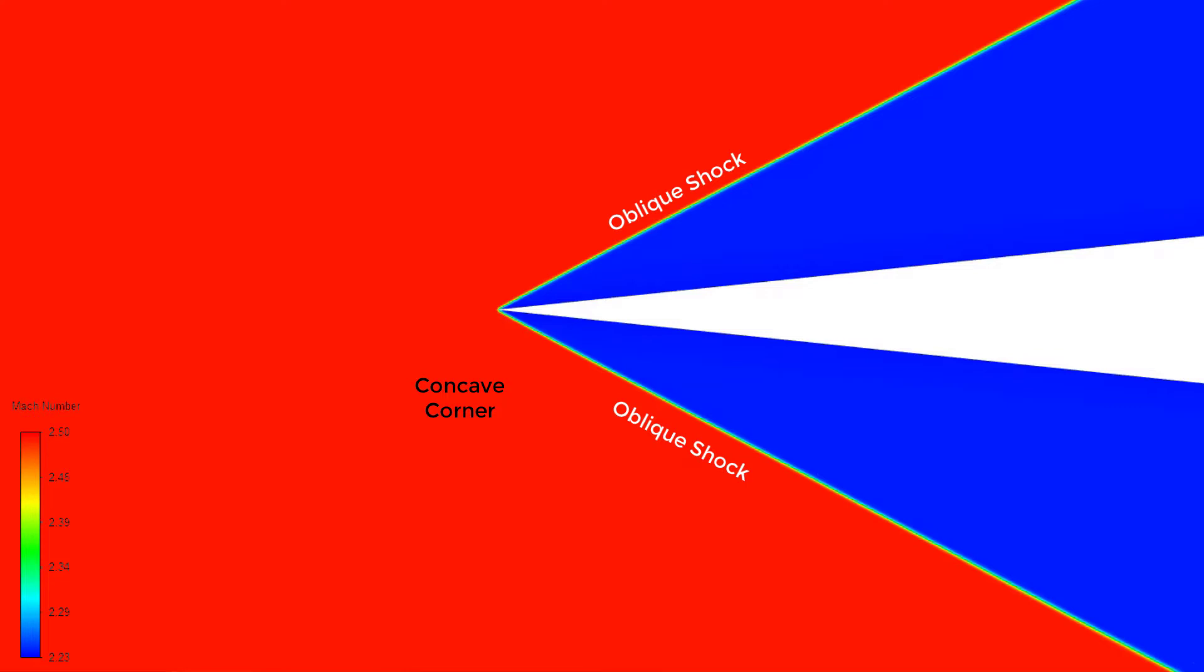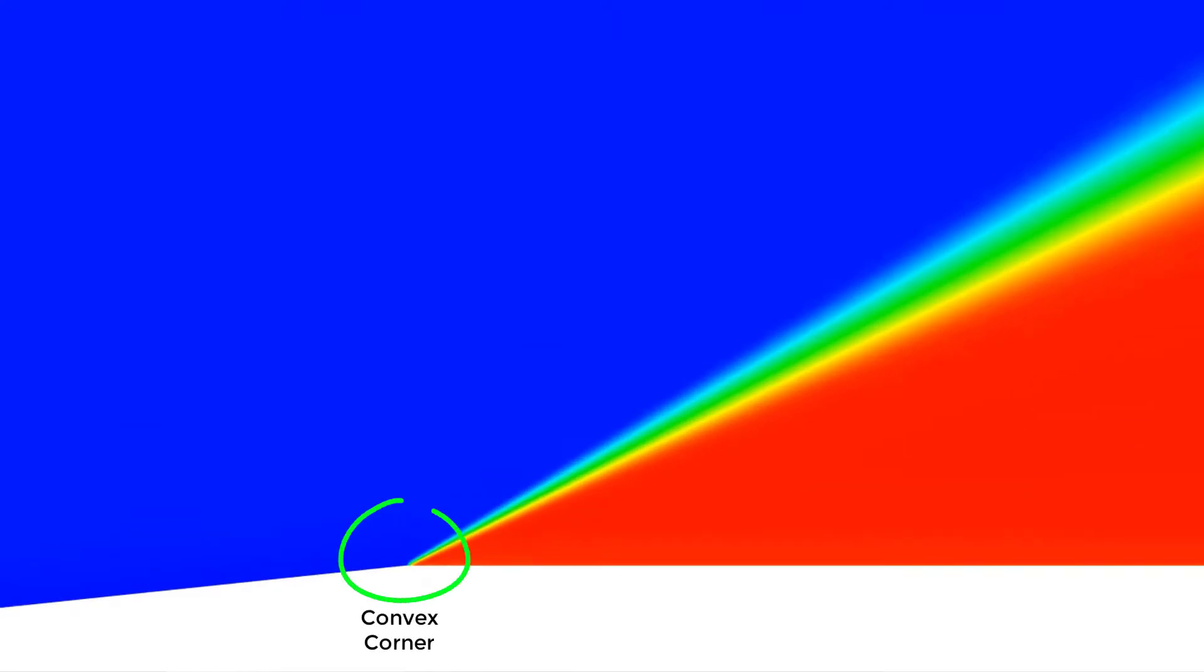Now as the flow moves further downstream, it encounters a convex corner. This creates a system of expansion waves. As the flow expands, the Mach number of the flow increases. That is, the flow accelerates and the static flow properties decrease.